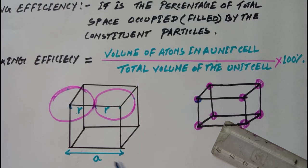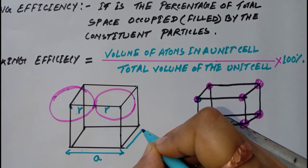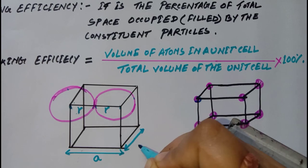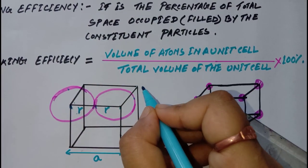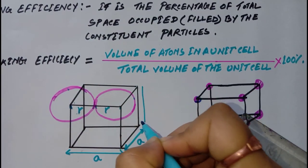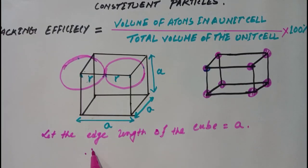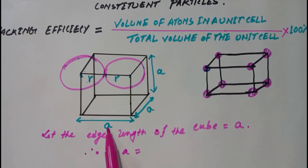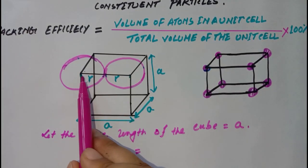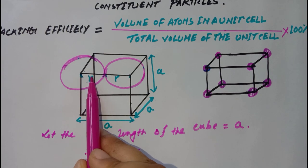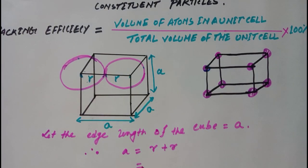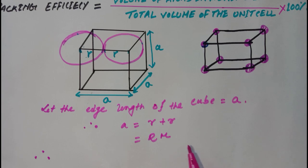This is A, the edge length, and this is another edge length A. Therefore, the edge length A is equal to r plus r, that is equal to 2r.